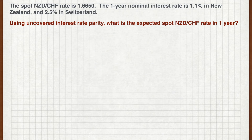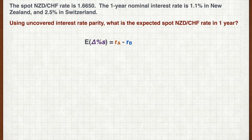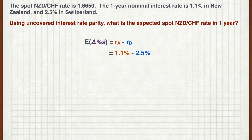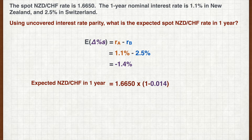We're back. First, we calculate the expected percentage change in the spot rate, which is simply the difference between the interest rates. Make sure the order is correct: it is the interest rate for the price currency minus that of the base currency. Plugging in the figures, we get minus 1.4%. Lowering the spot rate by 1.4%, we get an expected rate of 1.6417.